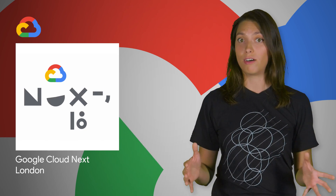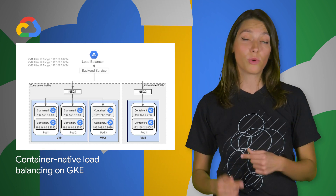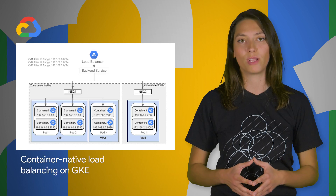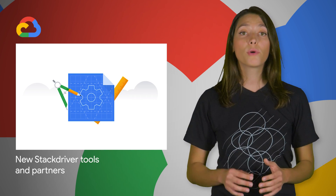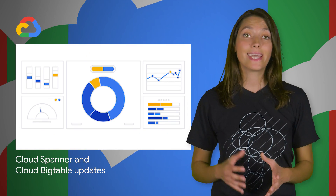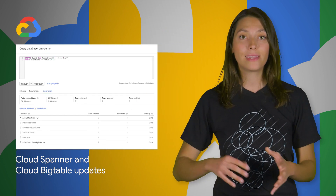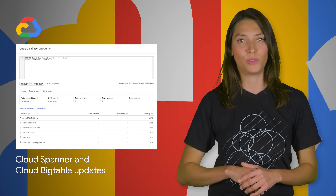Google Cloud Next London was awesome. There is a link to the session videos in the description below, and here are a few of the announcements. Container-native load balancing for applications running on Google Kubernetes Engine and Kubernetes on Compute Engine is now available. Stackdriver Incident Response and Management (IRM) on Google Cloud Platform is now available in alpha. We're adding enhancements to Cloud Spanner's SQL capabilities to make it easier to read and write data in Cloud Spanner databases using SQL, and use off-the-shelf drivers and tooling.